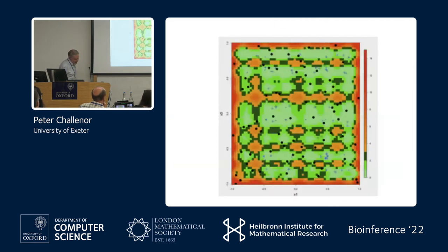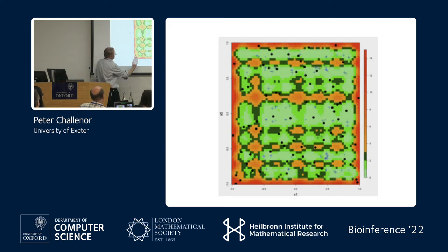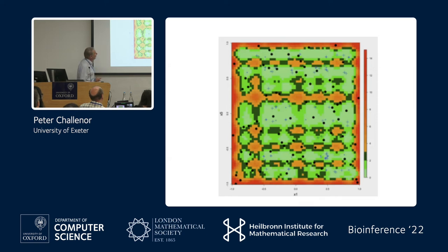This next example is a carbon fibre wafer for building aeroplanes — probably not typical for this meeting. But the important thing is this is the NROY space, and we can see this structure. When we went back to the people who gave us the model, they said 'oh yes, we knew about that — there's a cosine term in there.' So we're discovering things about the data that are definitely there, and that we might not have known about.